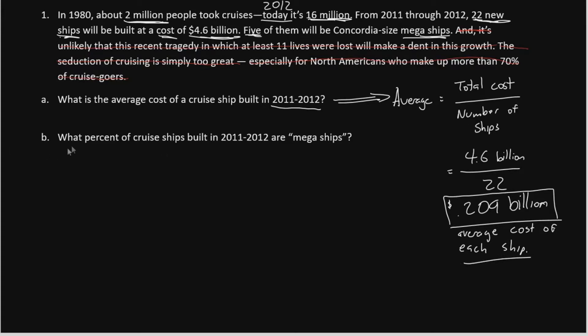Now, for part B, we are asked what percent of cruise ships are mega ships. So what we need to do for this is take our number of mega ships and divide by the total ships. In the question, they told us that five of the ships will be mega ships. Now, the total ships, as we said earlier, was 22.